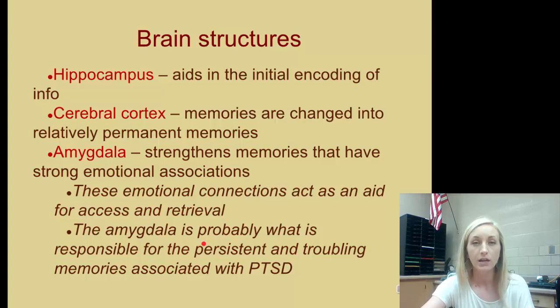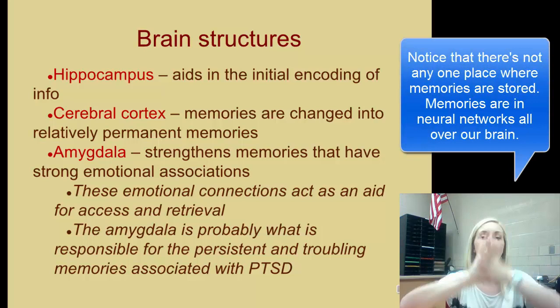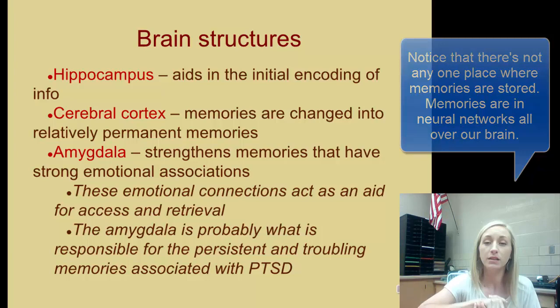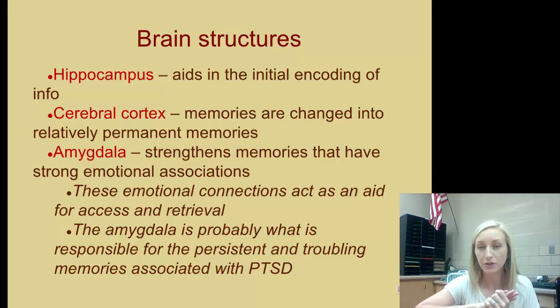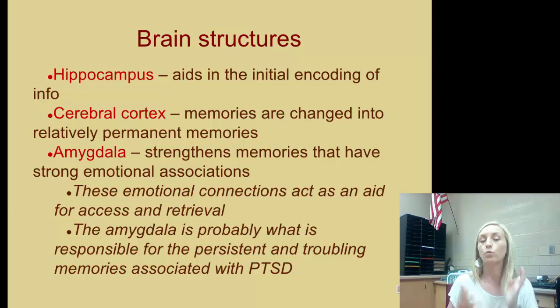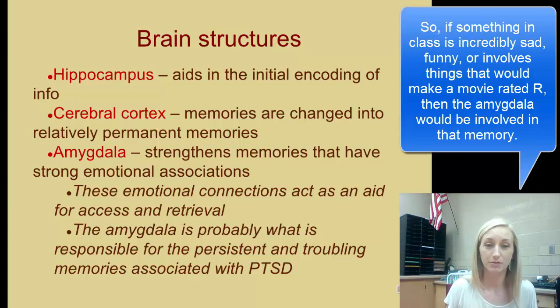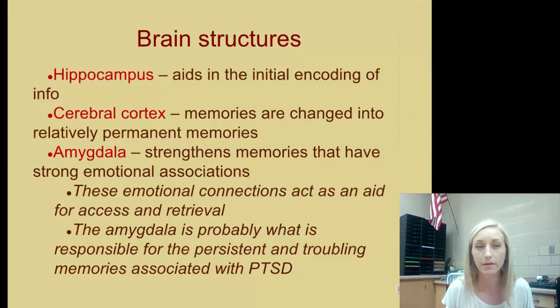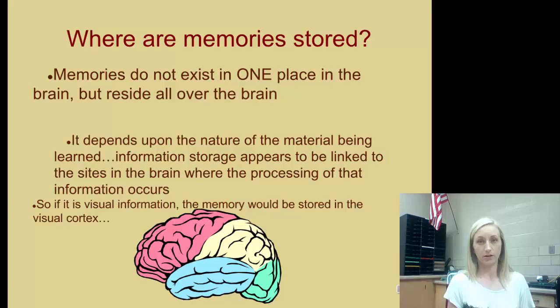The hippocampus aids in the initial encoding of information — it's what helps us process new information. The cerebral cortex is where memories are changed into relatively permanent memories. The amygdala strengthens memories that have strong emotional associations, and these emotional connections act as an aid for access and retrieval. So if we have an emotional tie to something we've learned, even in class, we will remember it better. The amygdala is probably responsible for the persistent and troubling memories associated with PTSD, because there is so much emotion with those memories, making them stronger and causing them to return even when unwanted.